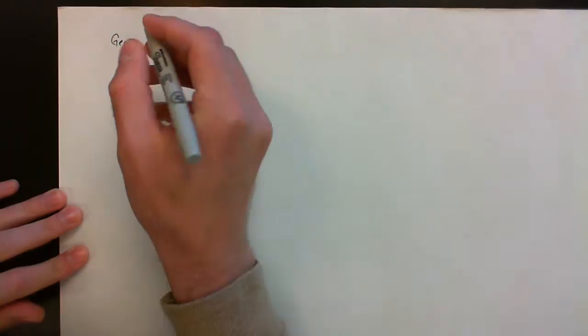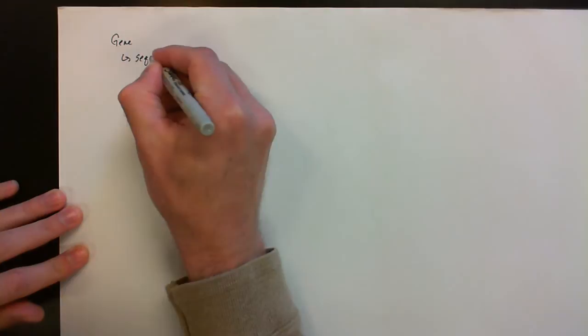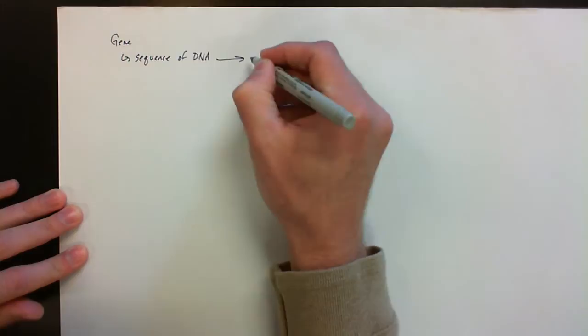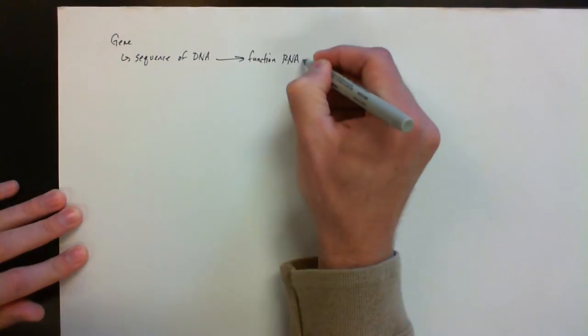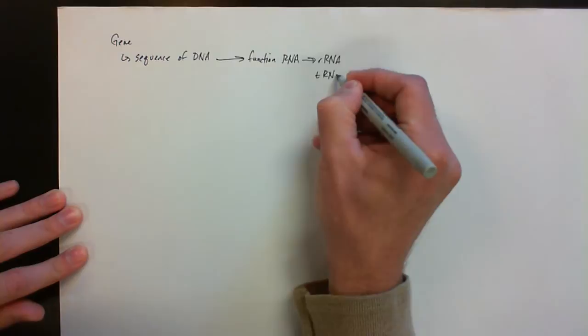One of the first things I want to describe to you is exactly what is a gene. A gene, in simplified definition, is a sequence of DNA that is going to lead to essentially either a functional RNA molecule, like a ribosomal RNA or perhaps tRNA, or it's going to lead to a protein.